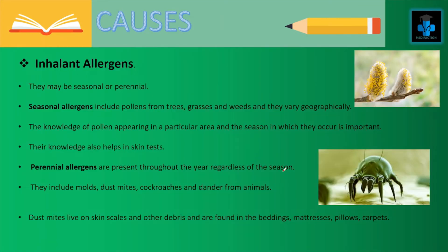Now let's see the causes of Allergic Rhinitis. First of all we have Inhalant Allergens, which may be seasonal or perennial. In seasonal allergens they include pollens from trees, grasses and weeds, and they vary geographically. Knowledge of pollens appearing in a particular area and the season in which they occur is very important and also helps in the skin test.